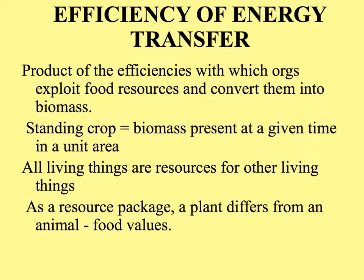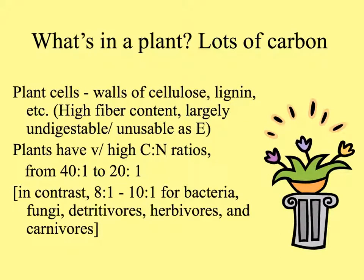Let's think about how plants and animals are different. Much of what makes up a plant is carbon, because plant cells have a lot of cellulose and lignin in them, and cellulose is a polymer of glucose. Because of this, plant leaves and plant parts have high fiber content, which is mostly undigestible and unusable for most organisms as energy. Because of this, plants have a very high carbon-to-nitrogen ratio, ranging from 20:1 to 40:1.